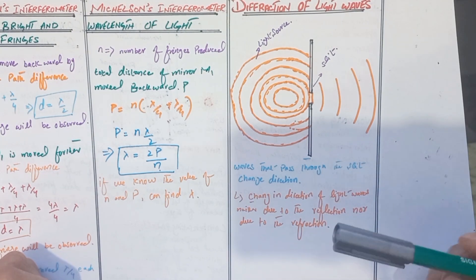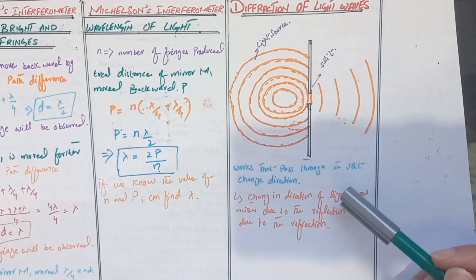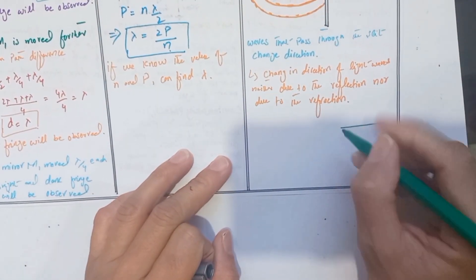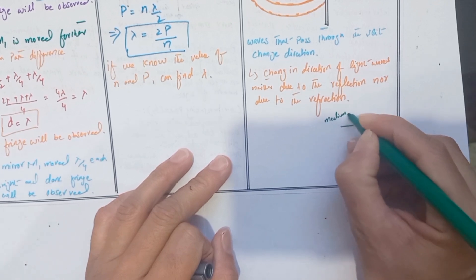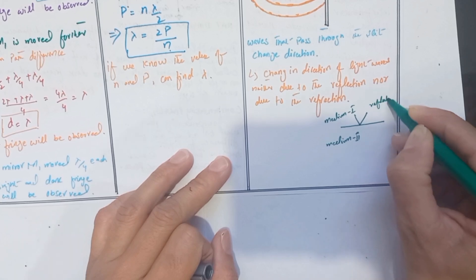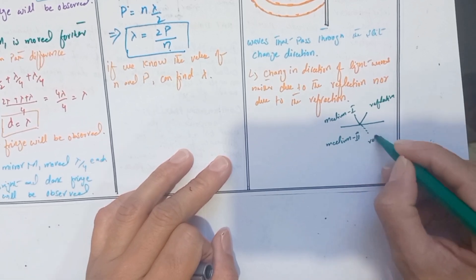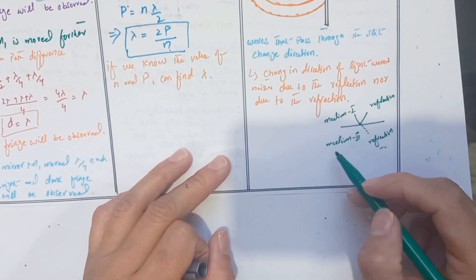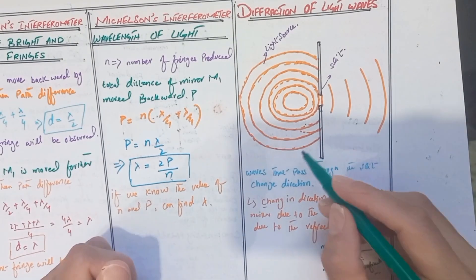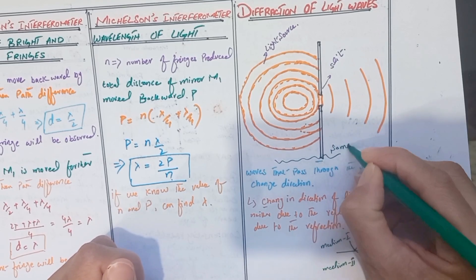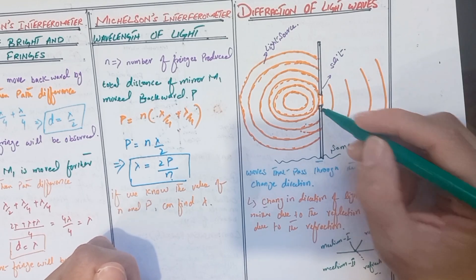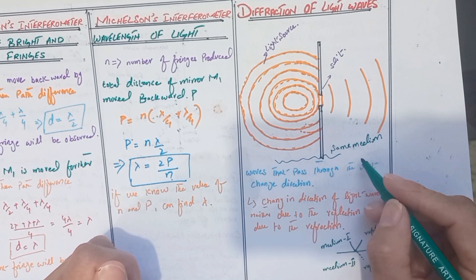In both reflection and refraction of a wave, the wave must be incident on a boundary between regions containing substances with different refractive indices — medium 1 and medium 2. But in the case of diffraction, we do not use different media. We use only one medium; the same medium exists on either side of the slit.